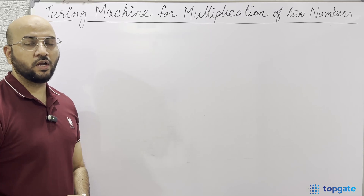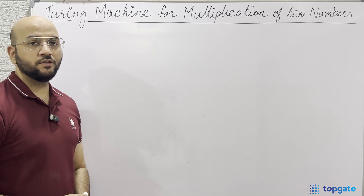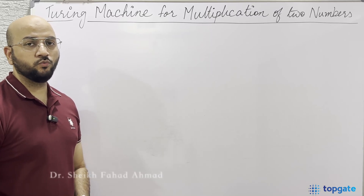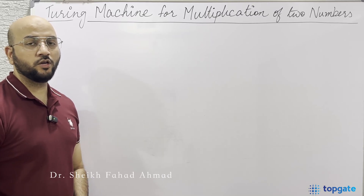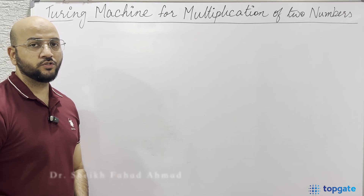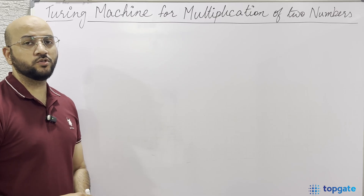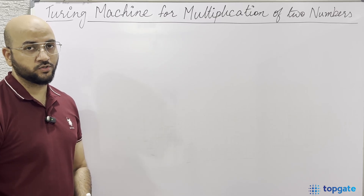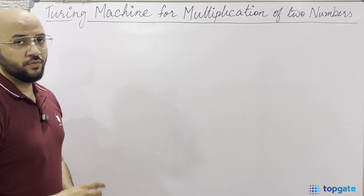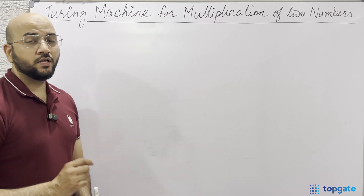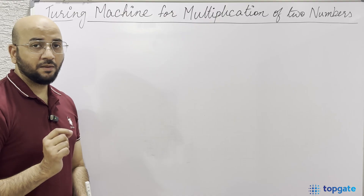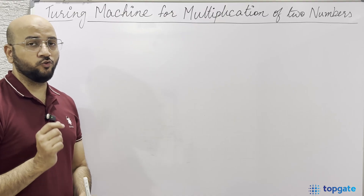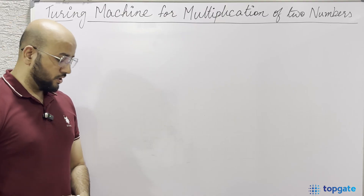Hello everyone, welcome to the channel TopGate. In this video, we will see one more problem on Turing machine - that is to design a Turing machine for the multiplication of two numbers. I am only concerned with the multiplication of unary numbers.